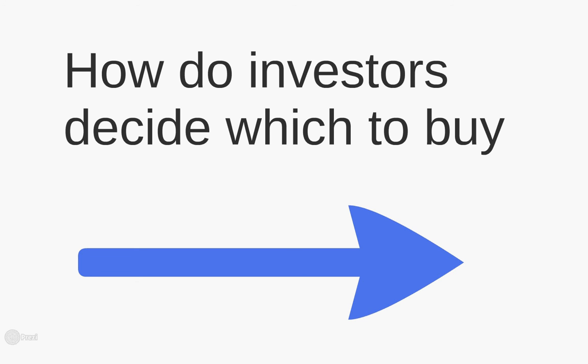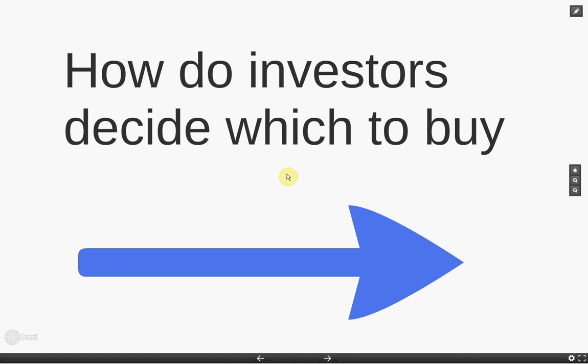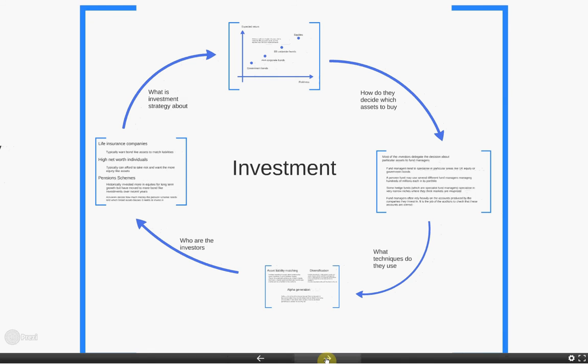Having considered the different types of assets — equities and bonds essentially — we come on to how investors decide which assets to buy. Investment is a whole other area; it's a specialism of the actuarial profession, and many people spend their entire lives working in just one niche of investment. We can think of it going around in a circle, a bit like the actuarial control cycle: what is investment strategy about, how do they decide which assets to buy, what techniques do they use, and who are the investors.